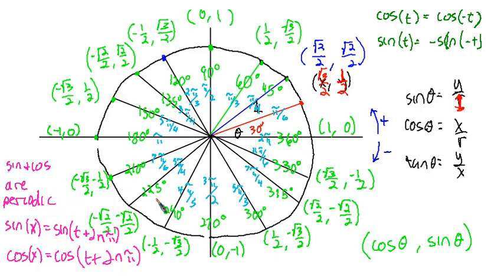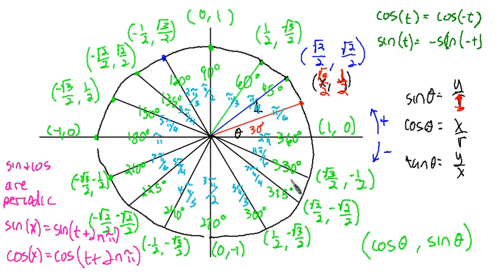Those are the main points we want to cover. We want to get out of it mostly the unit circle — we'll use it and reference it many many times to talk about things we observe about sine and cosine. We definitely want to have it and be familiar with it. Thanks for watching — let me know if you have any questions.